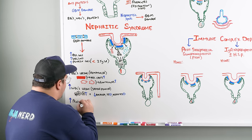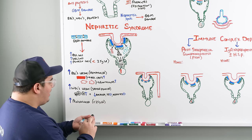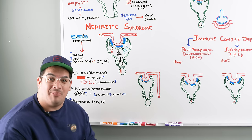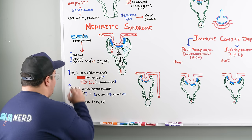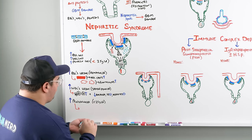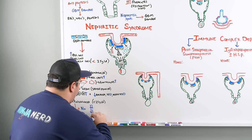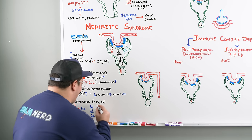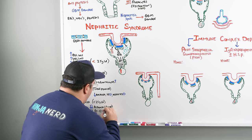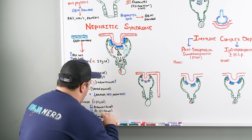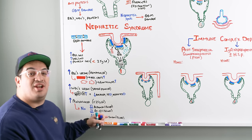The last finding is proteinuria, but this protein loss is less than 3.5 grams per day. Because of this, you will not see significant hypoalbuminemia, significant antithrombin 3 deficiency, or significant immunoglobulin loss. There won't be very low albumin, very low antithrombin 3, or very low immunoglobulins in the blood.